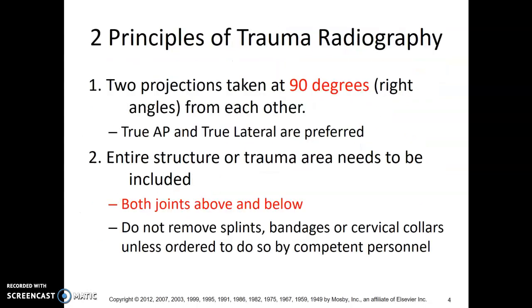Two main principles of trauma radiology: first, you need two projections taken 90 degrees — right angles — from each other. You need at least an AP and a lateral. How you obtain those depends on what the patient can do — tube angles or other adjustments.